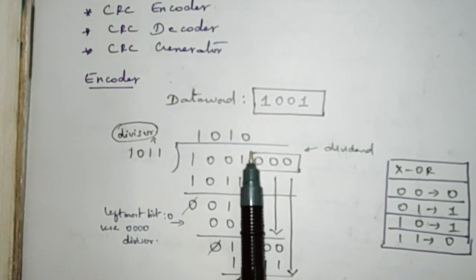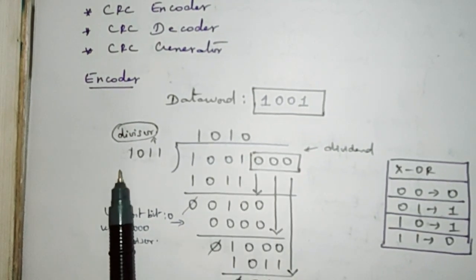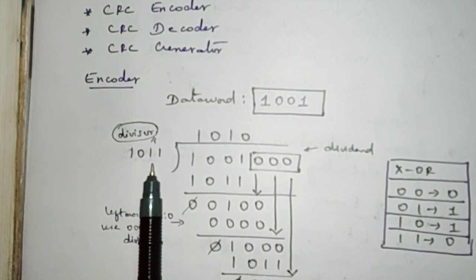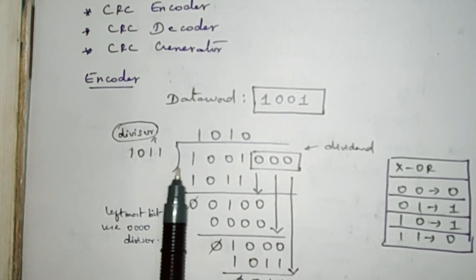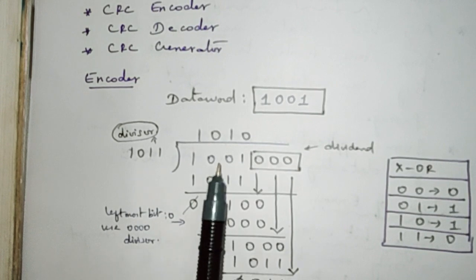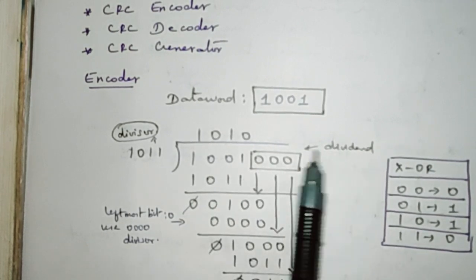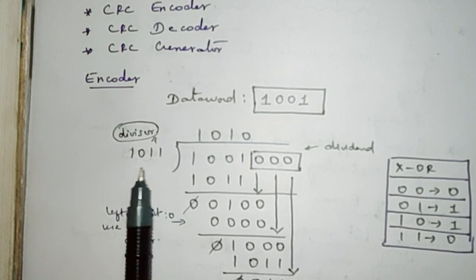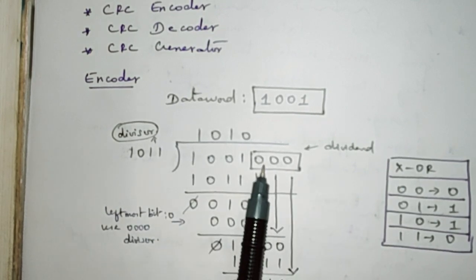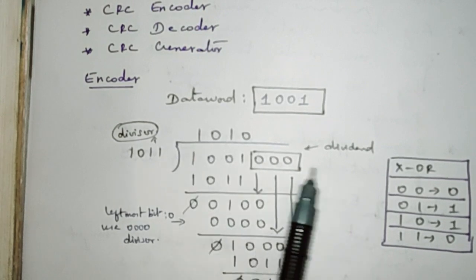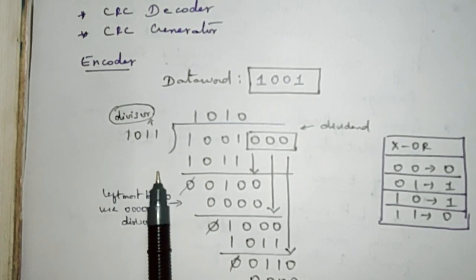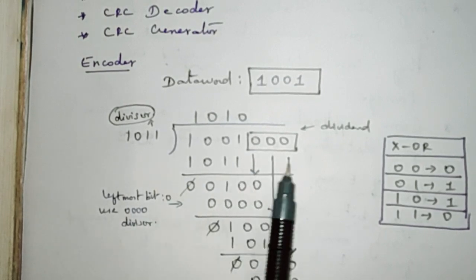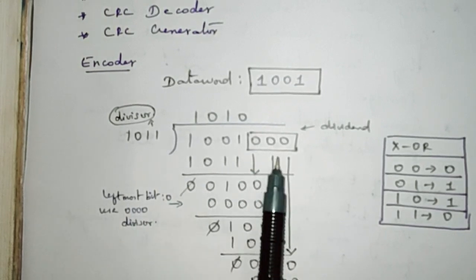In the data word we are going to augment some bits. If we take the divisor of n bits — for example 1011, where n is 4 — we need to add n minus 1 number of zeros to our data word, which will be our dividend. So n minus 1 is three zeros added to the data word. For example, if the divisor is 10110, where n is 5, then we need to add 4 zeros to our data word.